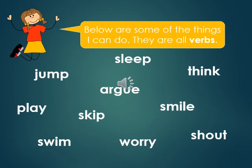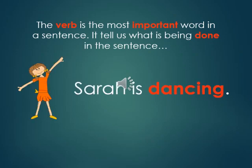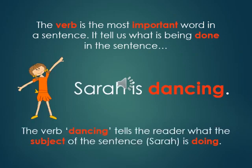Here are some verbs. Look at them carefully. My dear students, the verb is the most important word in a sentence. It tells us what is being done in the sentence. Sarah is dancing. The verb 'dancing' tells the reader what the subject of the sentence, Sarah, is doing.